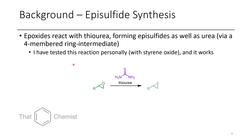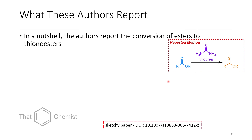If you wanted to make an episulfide, you can take an epoxide and treat it with thiourea, which will convert it to an episulfide. I've tested this with styrene oxide and the reaction does work. Now, what these authors report in their paper is treatment of esters with thiourea, claiming it forms thionoesters.